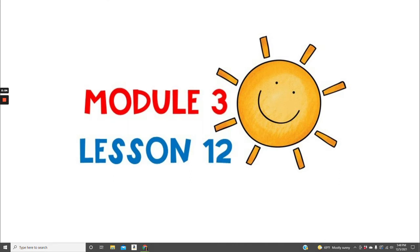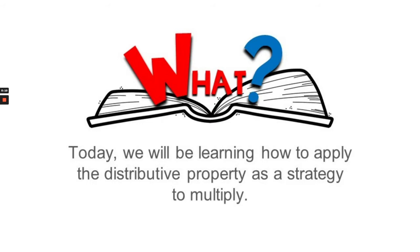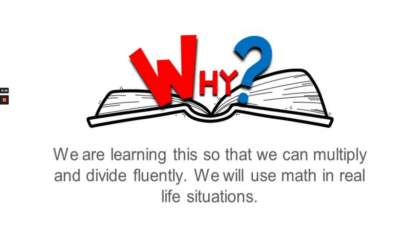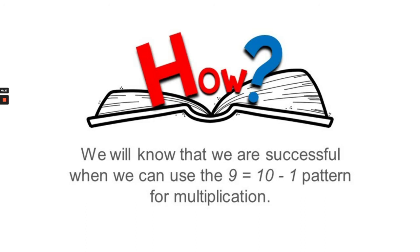Welcome to module 3, lesson 12. Today we will be learning how to apply the distributive property as a strategy to multiply. We are learning this so that we can multiply and divide fluently in real-life situations. We will know that we are successful when we can use the 9 equals 10 minus 1 pattern for multiplication.